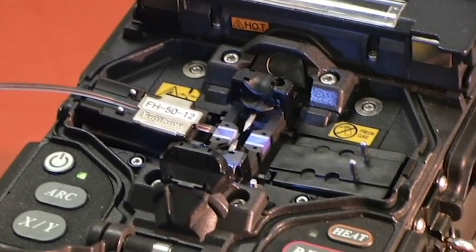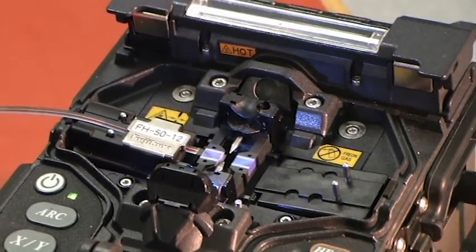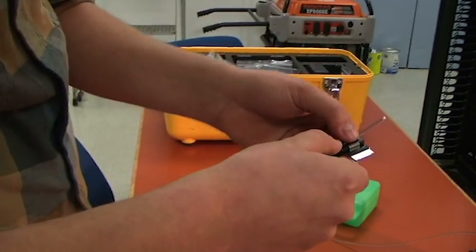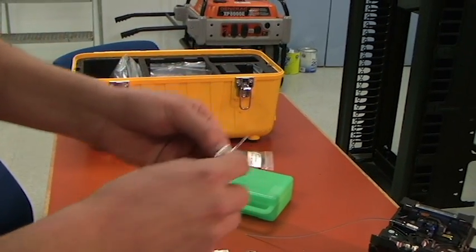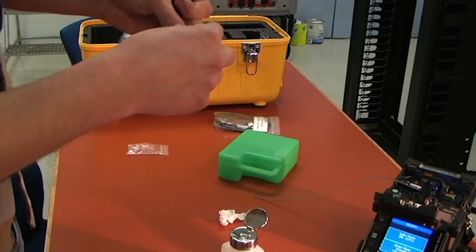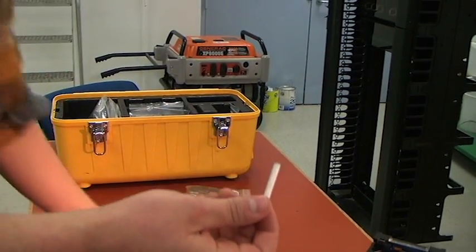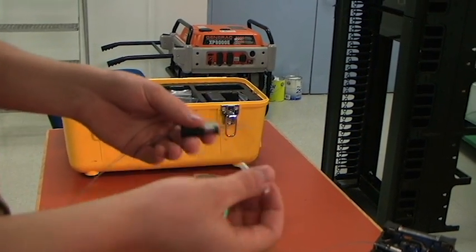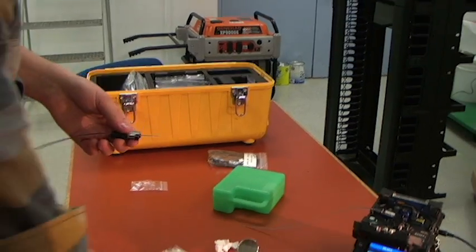Now we'll do the same process with our other side. Obviously if you were doing this in a real world situation you would want to put your ribbon splice sleeve over your fiber before we cleaved or spliced.